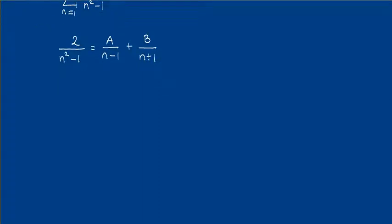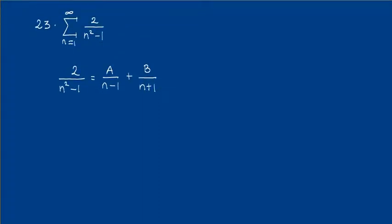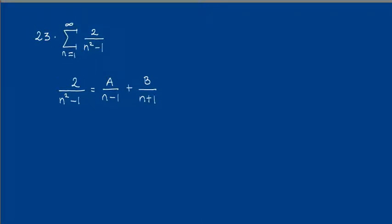Next problem, number 23. We want to find out whether this series, which the terms are 2 over n squared minus 1, is convergent or divergent. So first we want to write this 2 over n squared minus 1...